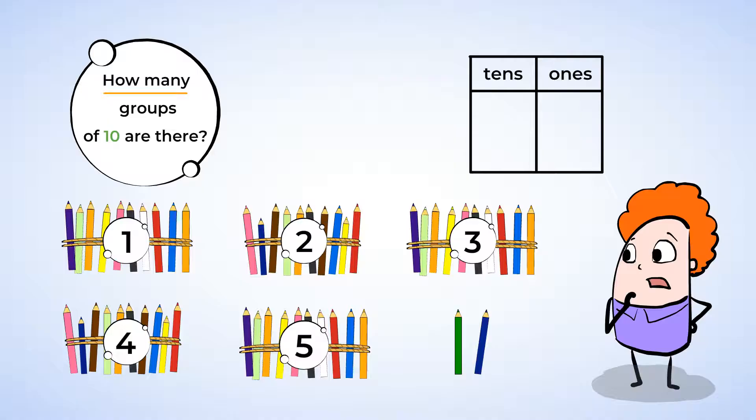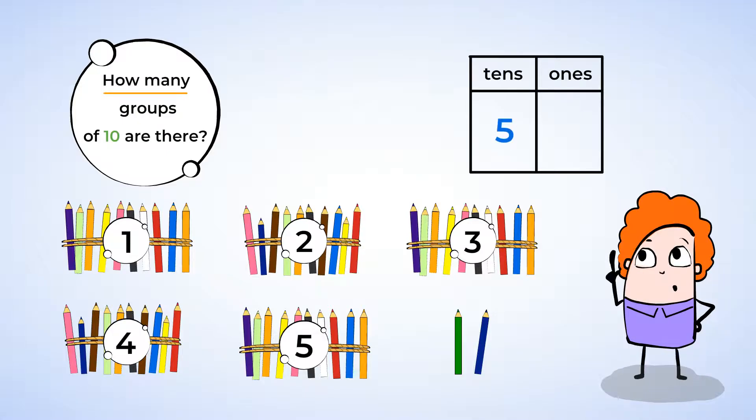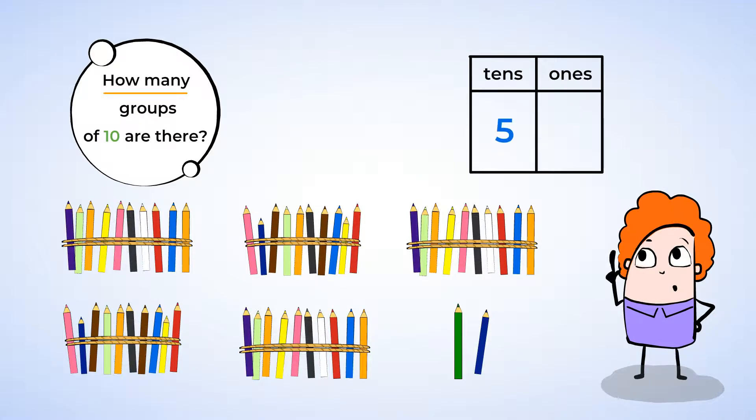So we're going to write the number 5 in the chart under the word 10s. And how many 1s are there? 1, 2. There are 2 1s. So we write the number 2 in the chart under the word 1s. And what is the number in the chart? 52.